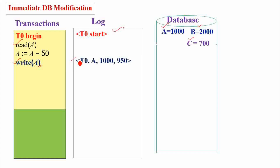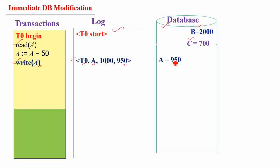The update record contains the transaction identifier, data item identifier, the old value of the data item, and the new value of the data item. When 50 rupees is transferred from A to B, the balance of A is reduced by 50, so it becomes 950. Since it is the immediate database modification technique, immediately after making the update record into the log, the A value is updated to 950 in the database.